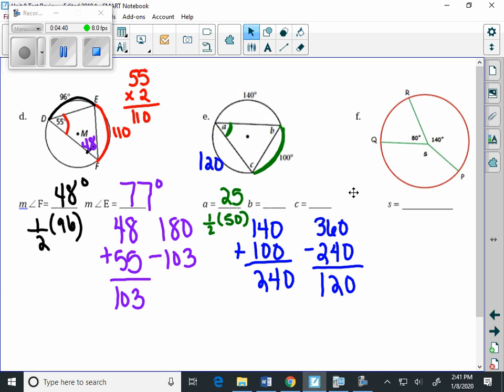We can do the same thing for letter C. This angle is half the measure of this arc.